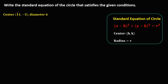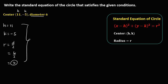For this given, the center is 11 and negative 5, so h is positive 11 and k is negative 5. Since the given is the diameter, the radius is half of the diameter: 6 divided by 2, so the radius is equal to 3. Now we write the standard equation of the circle using this formula.